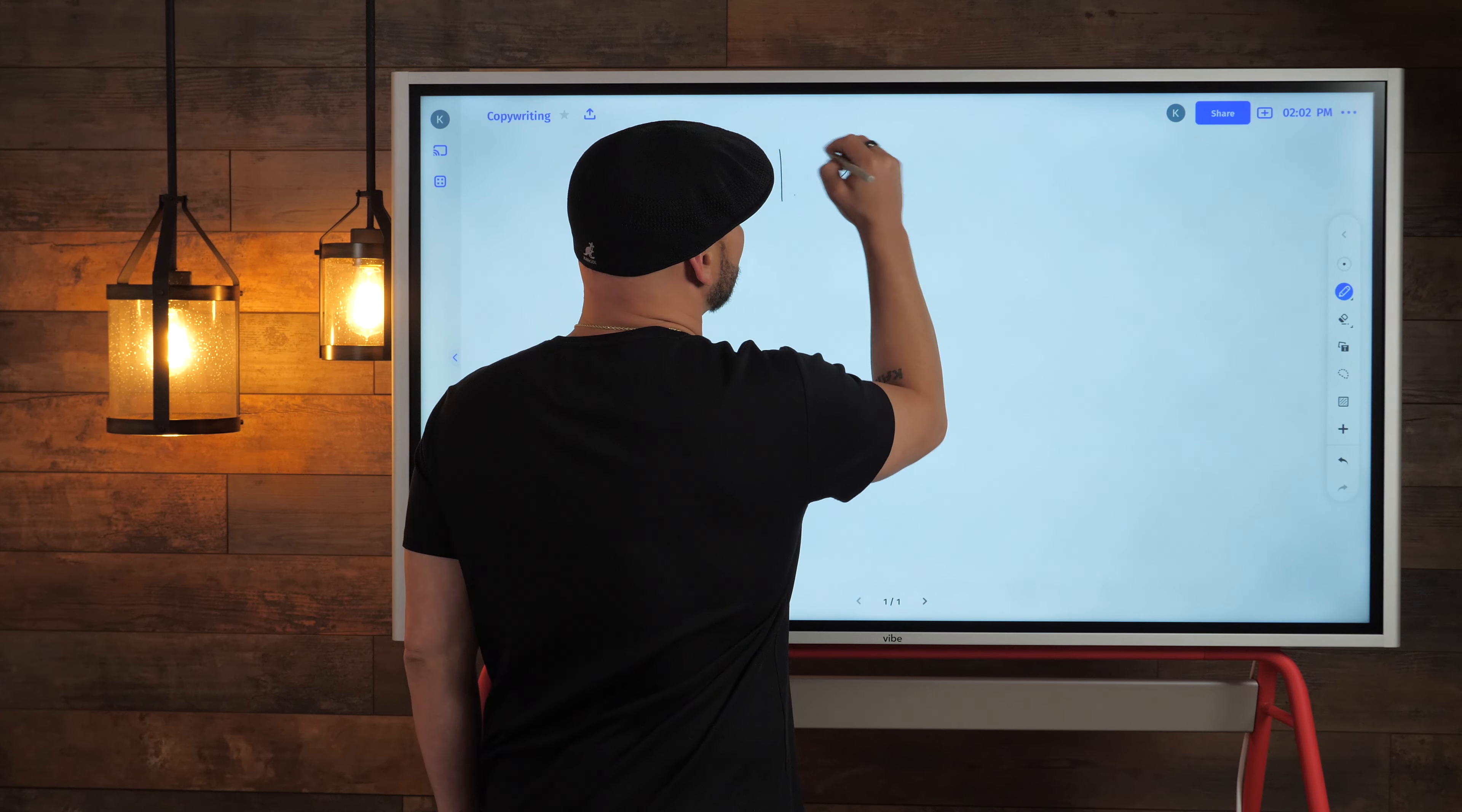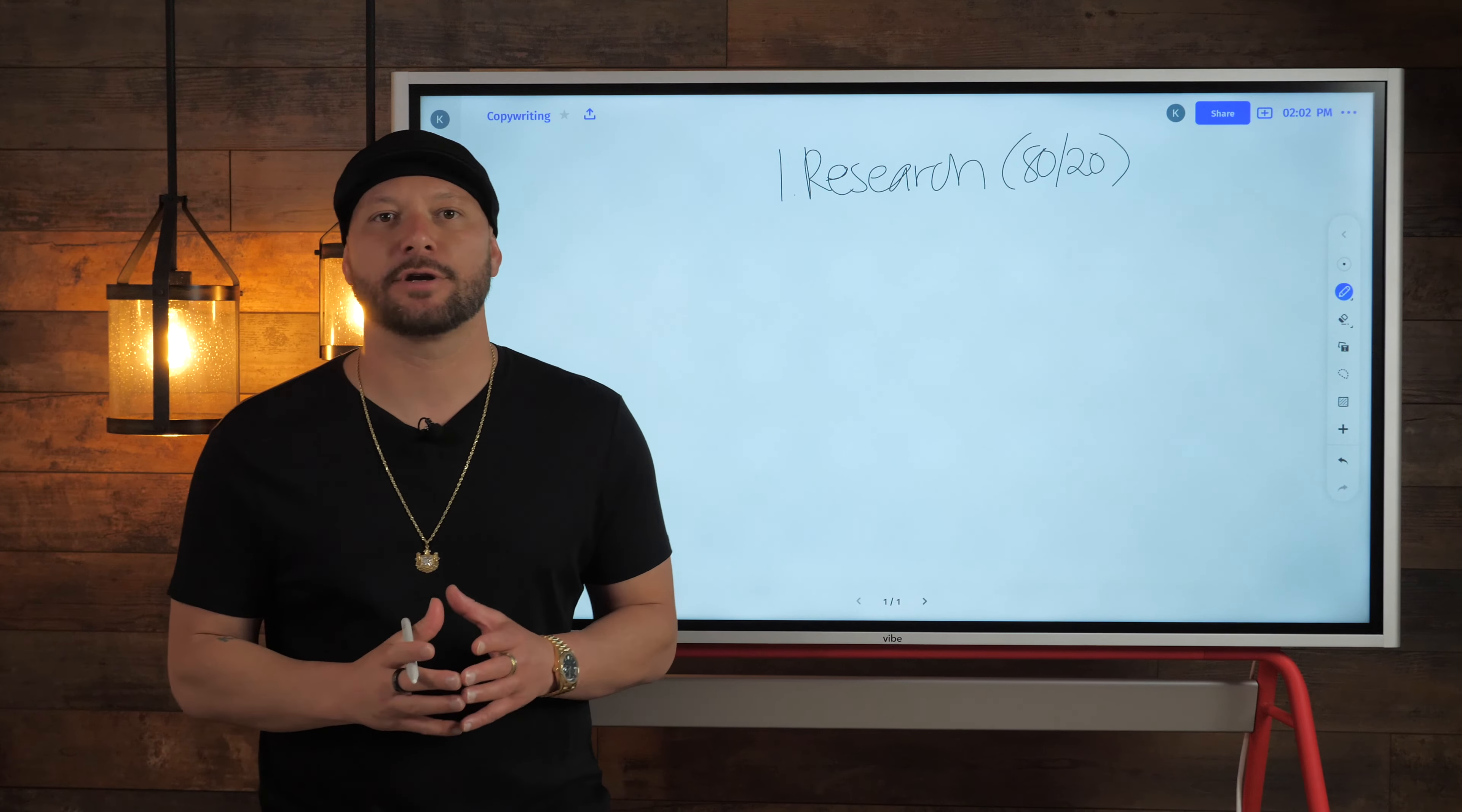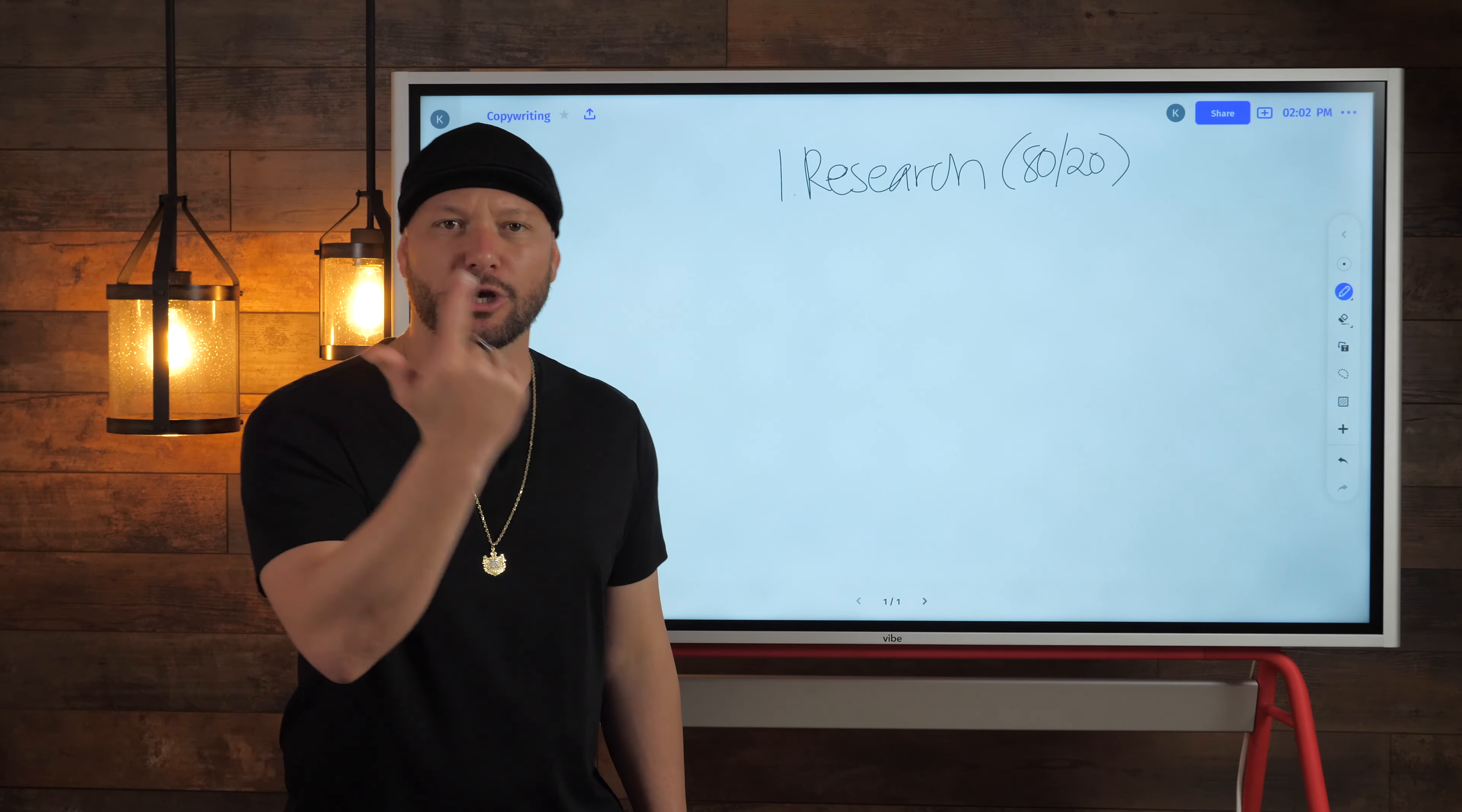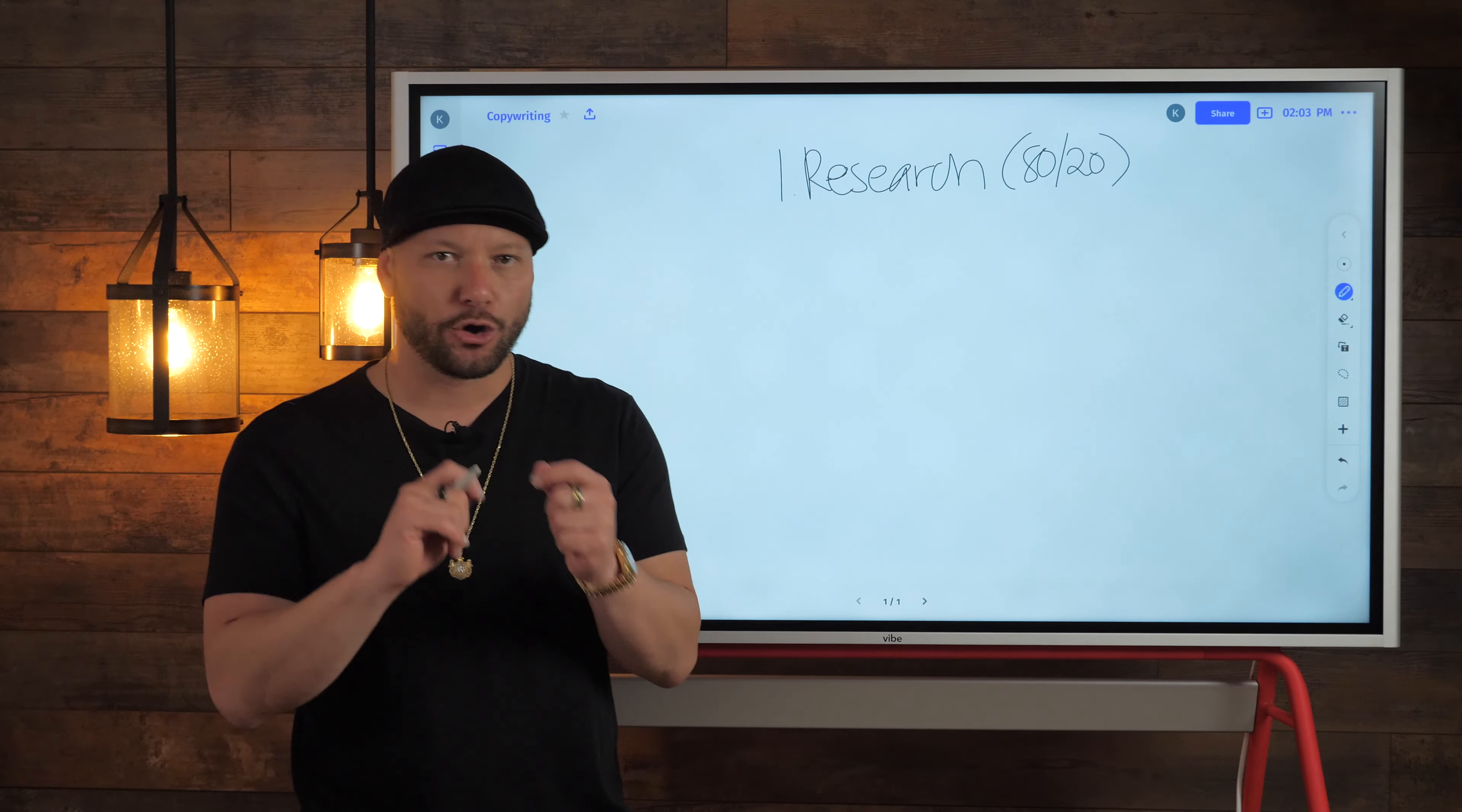All right, so tip number one is going to be about research. Spend more time doing the research than you are doing the writing. So I like to use the 80-20 principle here. Especially when you're just getting started and you're in a particular niche, you should be spending probably the majority of your time learning about your customer avatar in that niche, going into Facebook groups on the topic, looking at forums on that topic, getting on the list of other email marketers or marketers in that particular niche to learn about the psychology of your customer avatar.